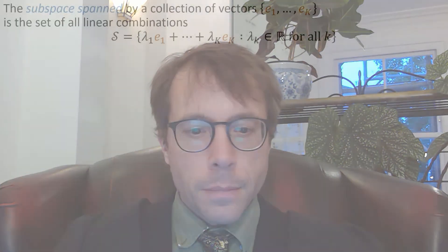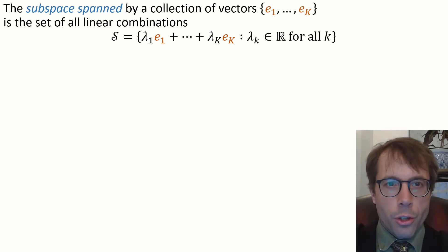So what do we need to know about linear maths? Here's the definition. This subspace spanned by a collection of vectors e1 up to ek, also known as the span of e1 up to ek, is the set of all linear combinations.